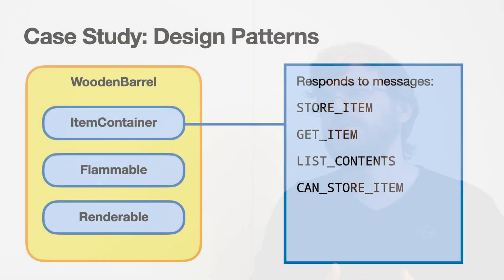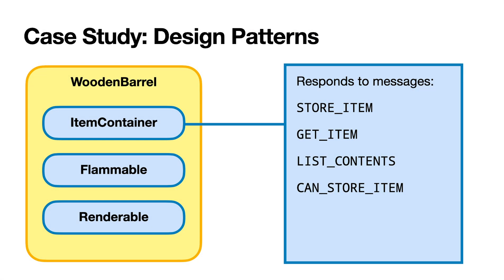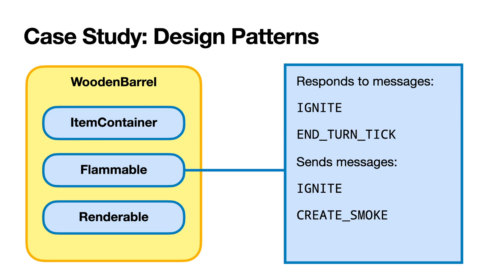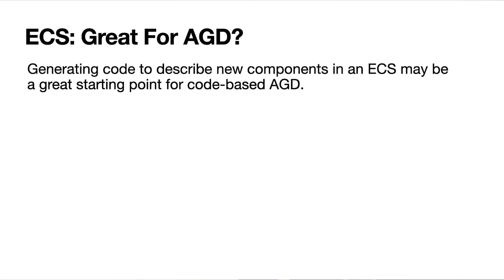To give a little worked example: suppose in our roguelike we have a wooden barrel object. The things this barrel can do — it can act as a storage container, so we can put items in, get items out, check its capacity. It's also flammable because it's made of wood, so we give it the flammable component. That means it will react to messages about being ignited. It will also send out messages that set fire to things that are inside it or near it.